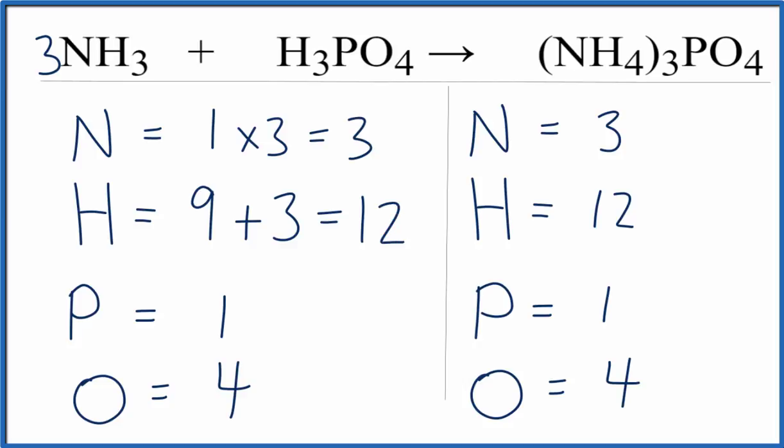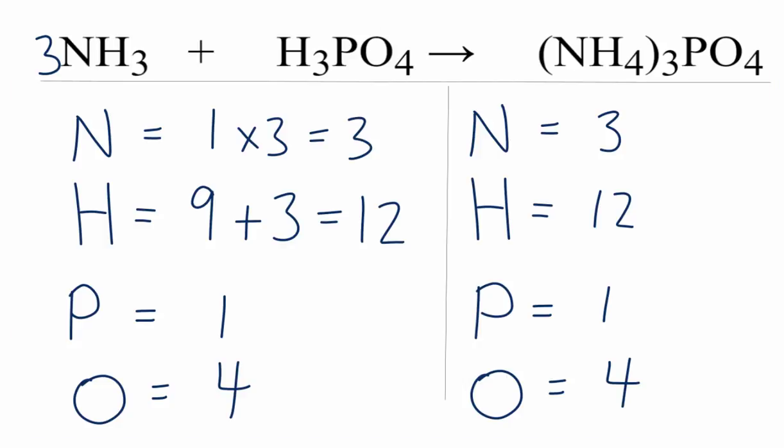Everything's equal. So by starting with the nitrogens, the hydrogens worked out. This is Dr. B with the balanced equation for NH3 plus H3PO4 yields (NH4)3PO4. Thanks for watching.